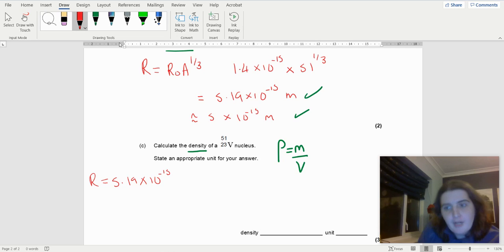I can work out my volume because I'm assuming it's a sphere. So volume of a sphere is 4 thirds π r cubed. So in this case, it's going to be that to the power of 3 times by π times by 4 divided by 3. And I get 5.86 × 10⁻⁴³.